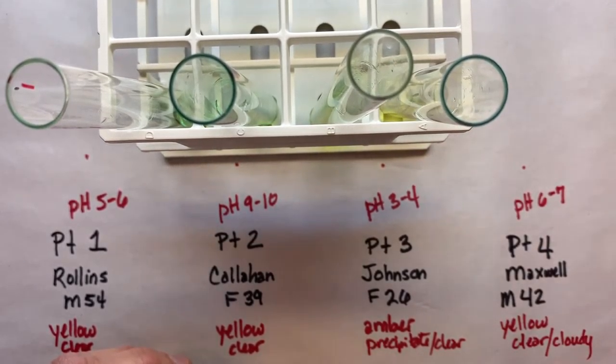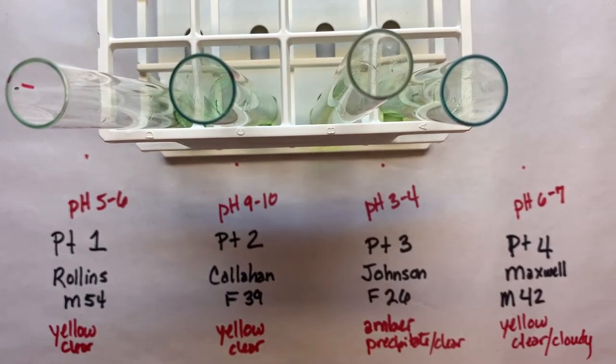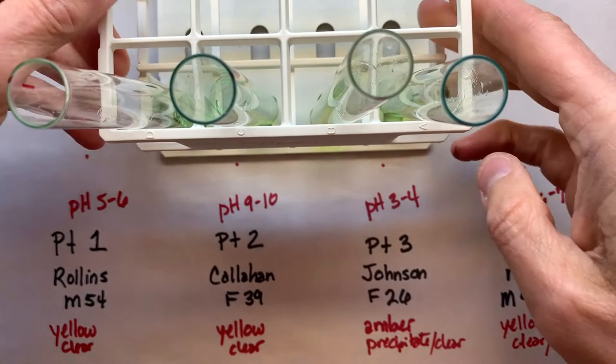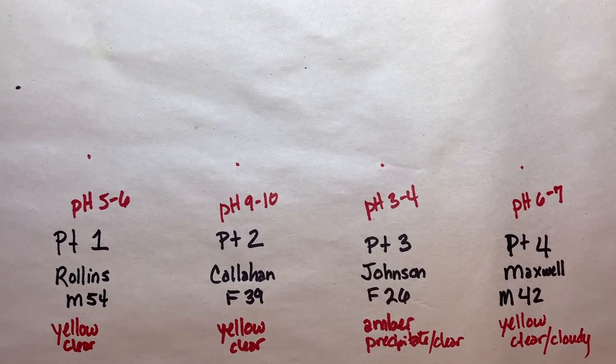All right, and the last one, patient number four. Okay, so that gives us 10 drops of Benedict's solution into one milliliter of urine for each of these patients. And now let's look at these tubes and record the colors that we see.